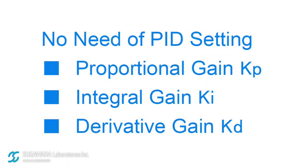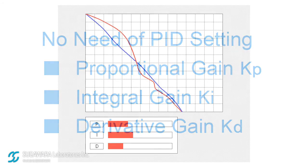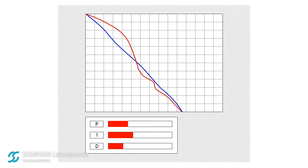The remarkable feature of Sugawara's dynamometers is that it is free from PID parameter setting. PID controlled dynamometers require appropriate parameter setting for testing, which requires knowledge and experience.